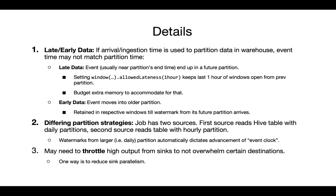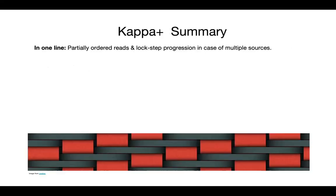You may need to throttle some of your sinks when doing offline processing, because the data volume is much larger than in real-time. If you're writing to a production-facing destination like Kafka or Cassandra, throttling prevents overwhelming those systems. In summary: Kappa+ is very simple — partially ordered reads and lockstep progression. That's all you need to tackle the three categories of jobs.